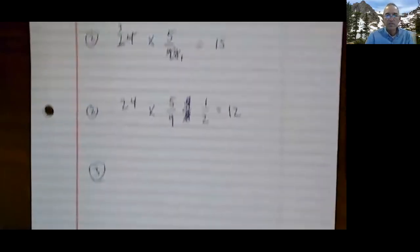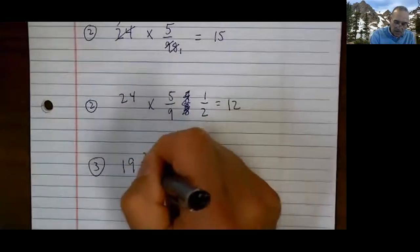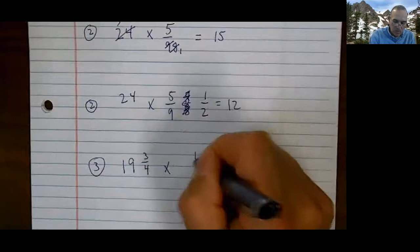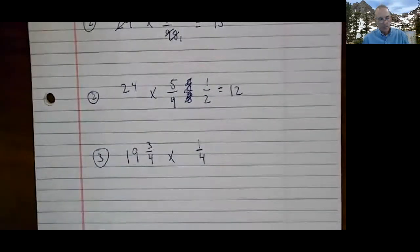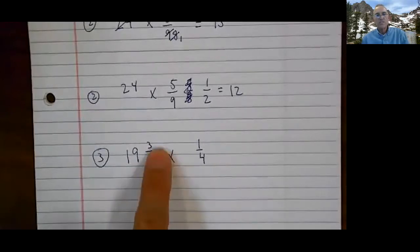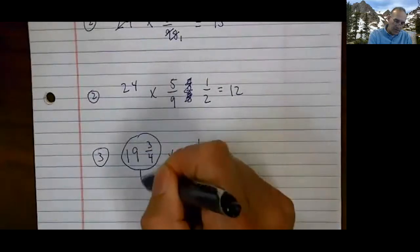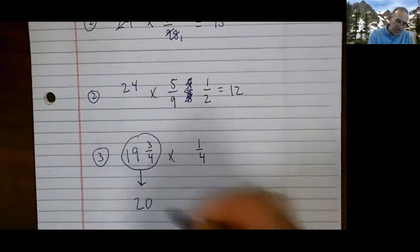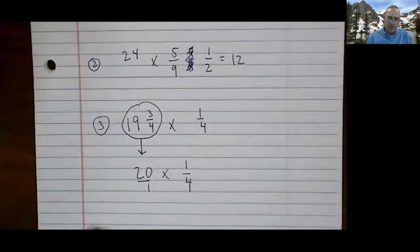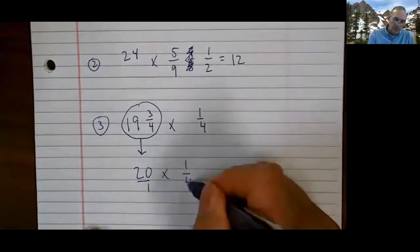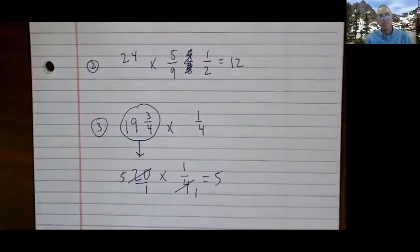Three. This one's different. This says nineteen and three-fourths times one-fourth. Since I'm estimating, I can change numbers. If I look at all this together, I go, well, that's close to 20, isn't it? Sure is. Now I can go, well, look at that. You see what I did? Four goes into four once. Four goes into there five times. Boom. There's my estimate.